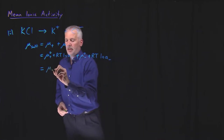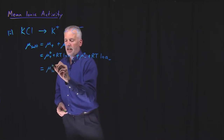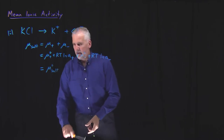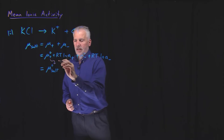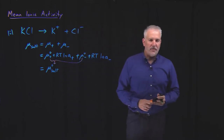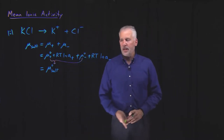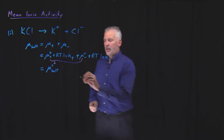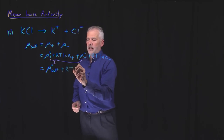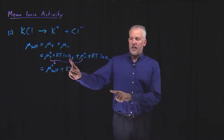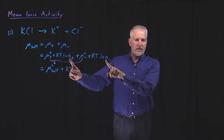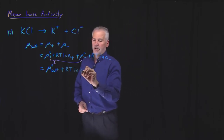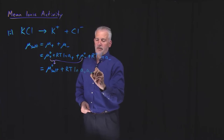We combine the standard state chemical potentials of the cation and anion into a single standard state chemical potential of the salt. What we're really interested in are the terms involving activity. We have RT ln of the cation activity and RT ln of the anion activity. Adding these two natural logs together is the same as the natural log of their product — the activity of the cation times the activity of the anion.